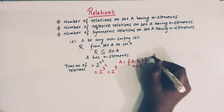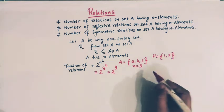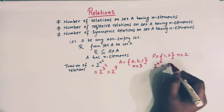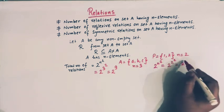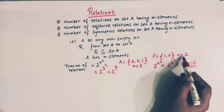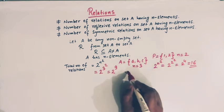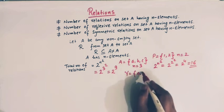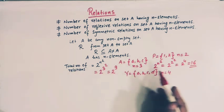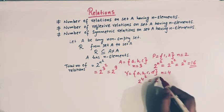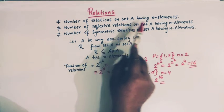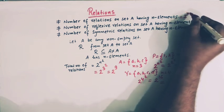Similarly, if we have any set P containing only 2 elements, then the number of relations on set P is given by 2^n² where n is 2. So we have 2 raised to 2 square, that is 2 raised to 4, which is 16. So the total number of relations on set P is 16.